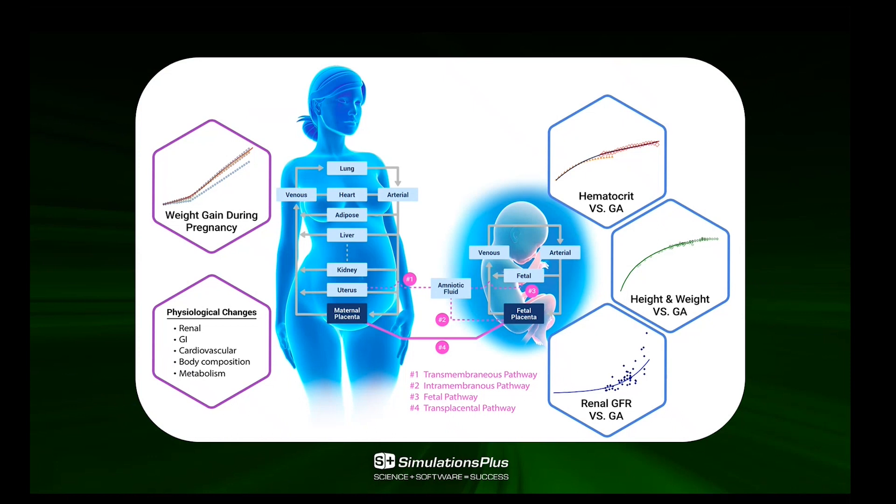From the fetal side on the right, we have a simplified structure for the PBPK tissue, where the fetus by itself is represented as a one compartment, fetal compartment, and we have both venous and arterial blood flow. The fetal placenta is also presented and connected directly to the maternal placenta.